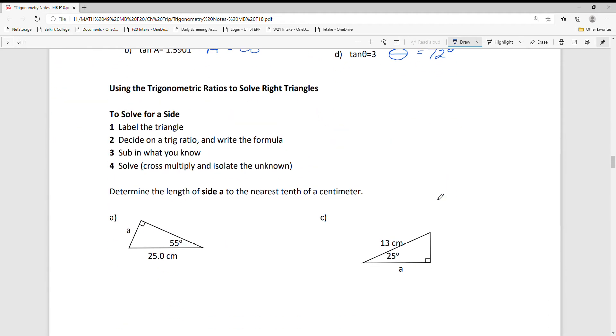Moving on, we're going to be using the SOHCAHTOA, the sine, cos, and tan ratios to solve triangles. The sine of an angle equals opposite over hypotenuse, cosine equals adjacent over hypotenuse, and tangent equals opposite over adjacent.